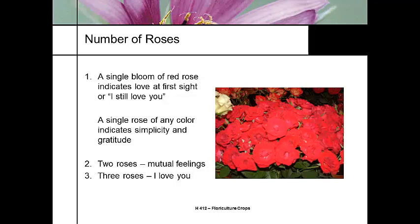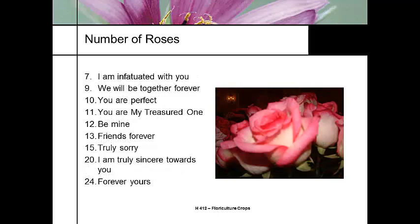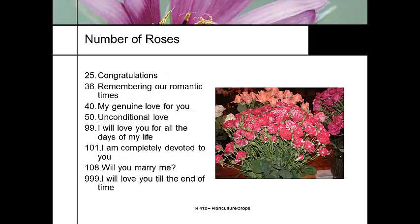Two roses means mutual feelings that we share. Three again is love. Seven has the specific meaning of infatuation. Twenty-five roses is actually congratulatory — when you send a bouquet of roses to a client for their restaurant or their store or their law office, that is a congratulatory statement.